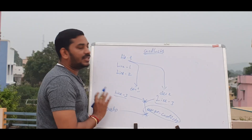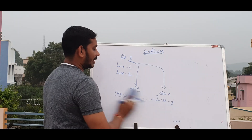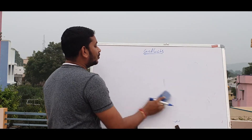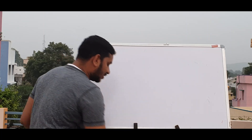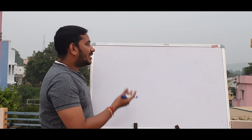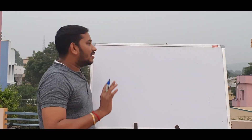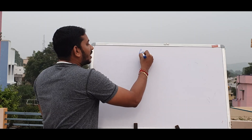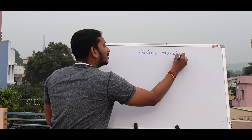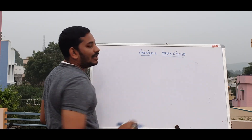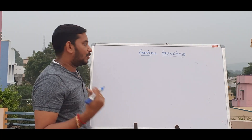In Git Flow you have two long-lived branches and three short-lived branches. However, this model has a lot of CICD complexity. Feature branching strategy supports CICD in a different and better way — one developer works independently without depending on others.